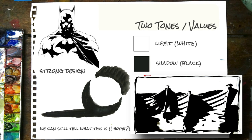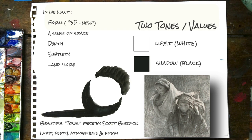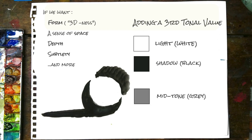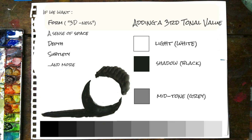However, if we want to start creating artworks with more form, 3D-ness, a sense of space and depth, and just general more subtlety, we do need to start looking at using more tones in the analysis, interpretation, and application. So in order to keep it simple and slowly build up to more tones, let's just introduce one extra tone, which we will call a generic mid-tone. This is neither dark nor light — it's somewhere in the middle — which will be represented by grey.